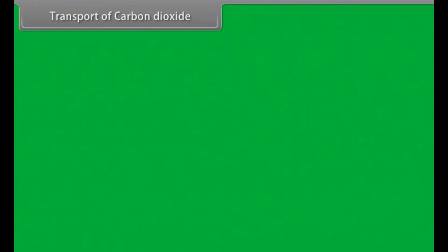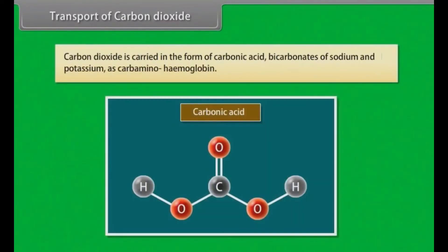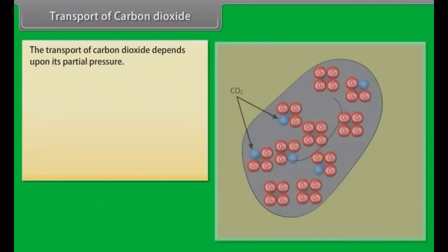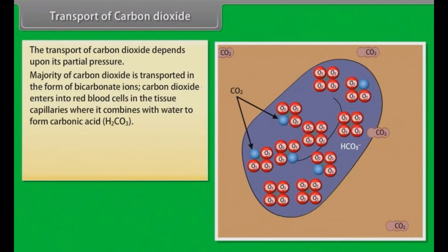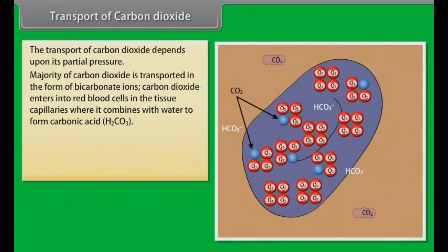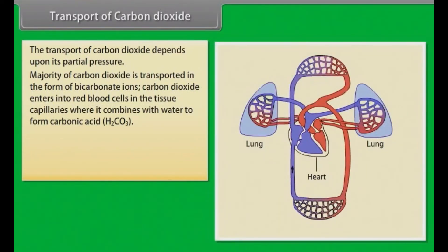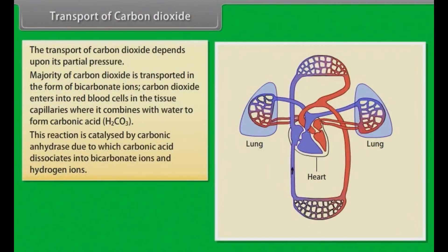Transport of Carbon Dioxide. Carbon dioxide is carried in the form of carbonic acid. The transport of carbon dioxide depends upon its partial pressure. The majority of carbon dioxide is transported in the form of bicarbonate ions. Carbon dioxide enters red blood cells in the tissue capillaries, where it combines with water to form carbonic acid. This reaction is catalyzed by carbonic anhydrase, causing carbonic acid to dissociate into bicarbonate ions and hydrogen ions.